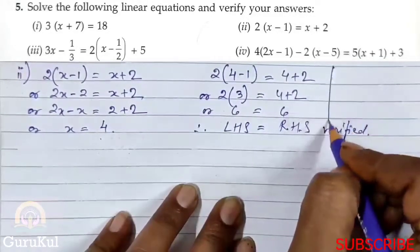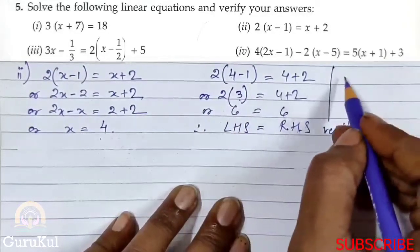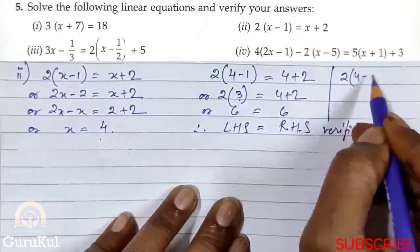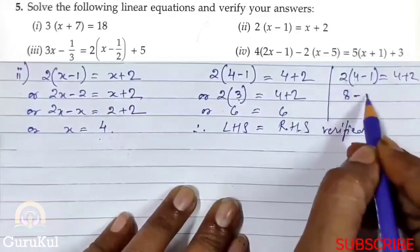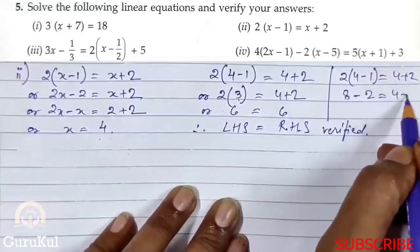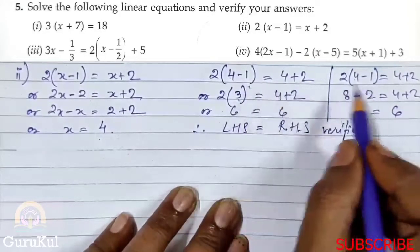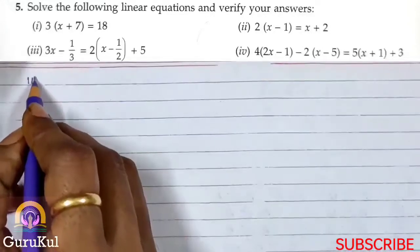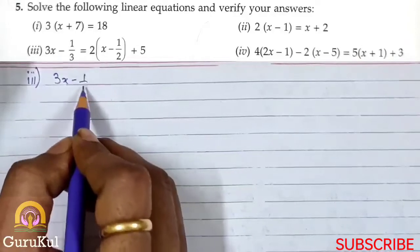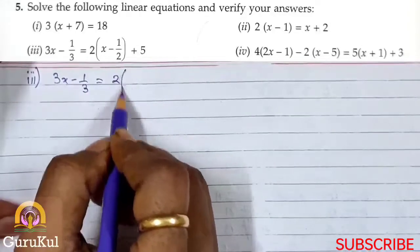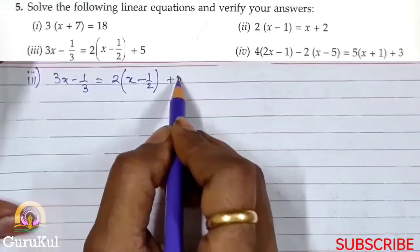There are two ways to approach the verification — one is to substitute directly, and the other is to expand the brackets and multiply. We can do it two ways. The third part of question number 5 is: 3x minus 1 by 3 is equal to 2 bracket x minus 1 by 2 bracket closed plus 5.